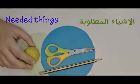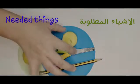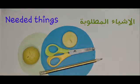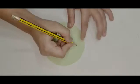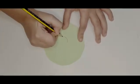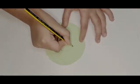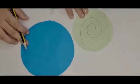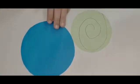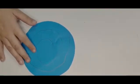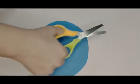Now you have to draw a spiral shape. It's okay if it's not a perfect circle. And here I'm gonna do a bigger one. Now let's cut it.